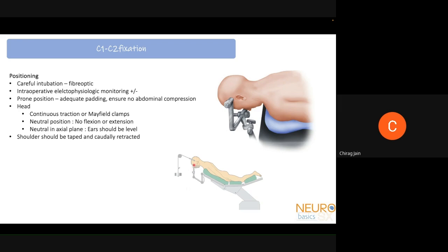It is very important for the head to be completely neutral — no flexion and no extension. When fixing C1 and C2, the head should be fixed in a neutral position, also neutral in the axial plane with ears leveled on both sides. The shoulders should be taped and retracted caudally so the C1-C2 junction is clearly visible.